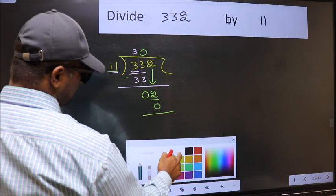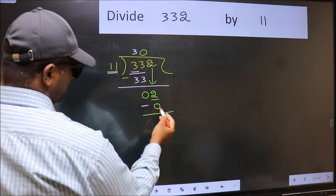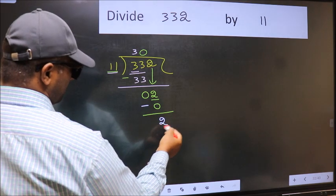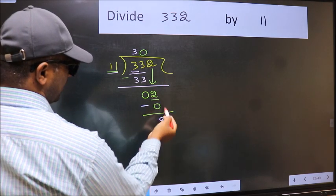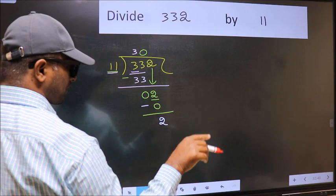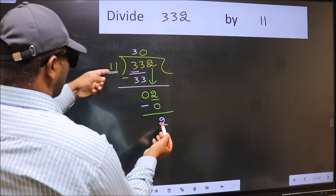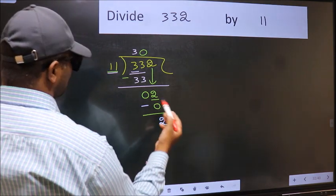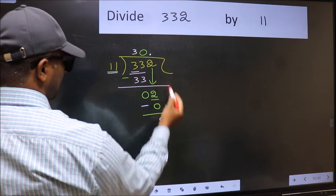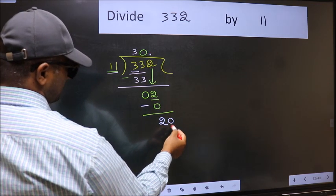Now you should subtract. 2 minus 0, 2. So 2. Over here, we did not bring any number down. And 2 is smaller than 11. So now you can put dot and take 0. So 20.